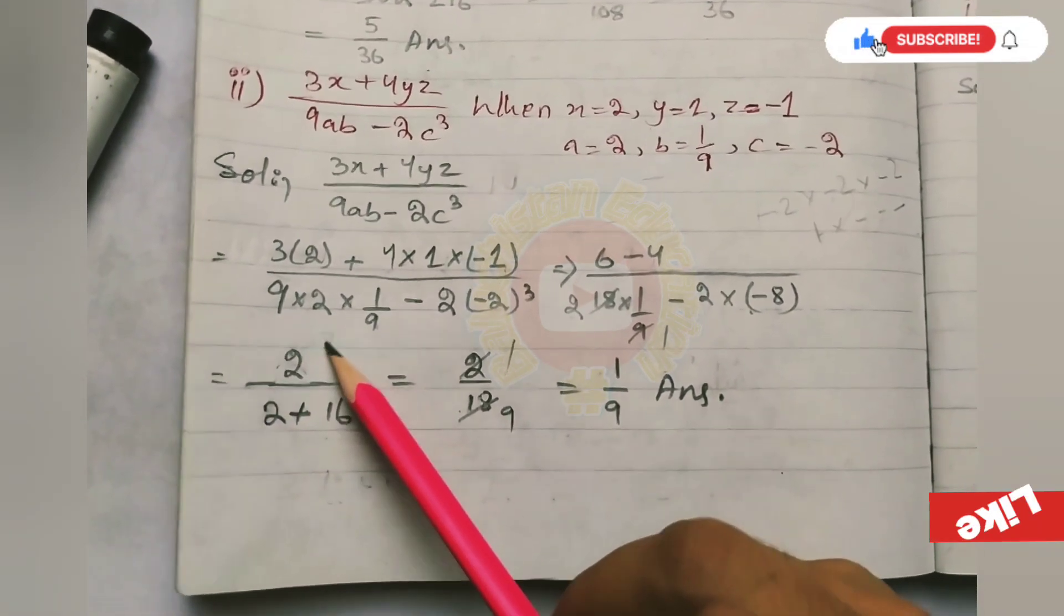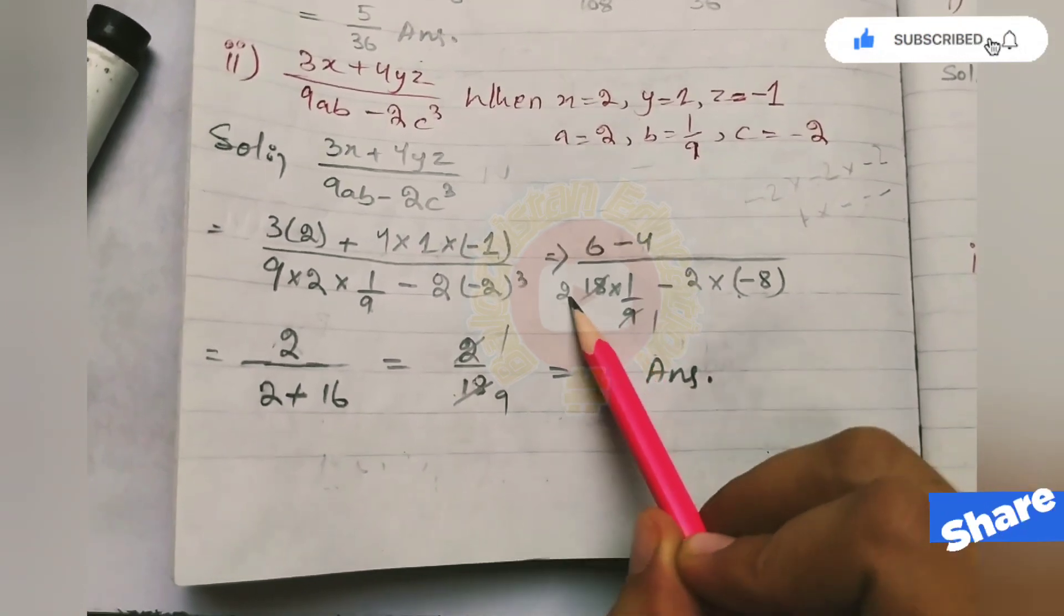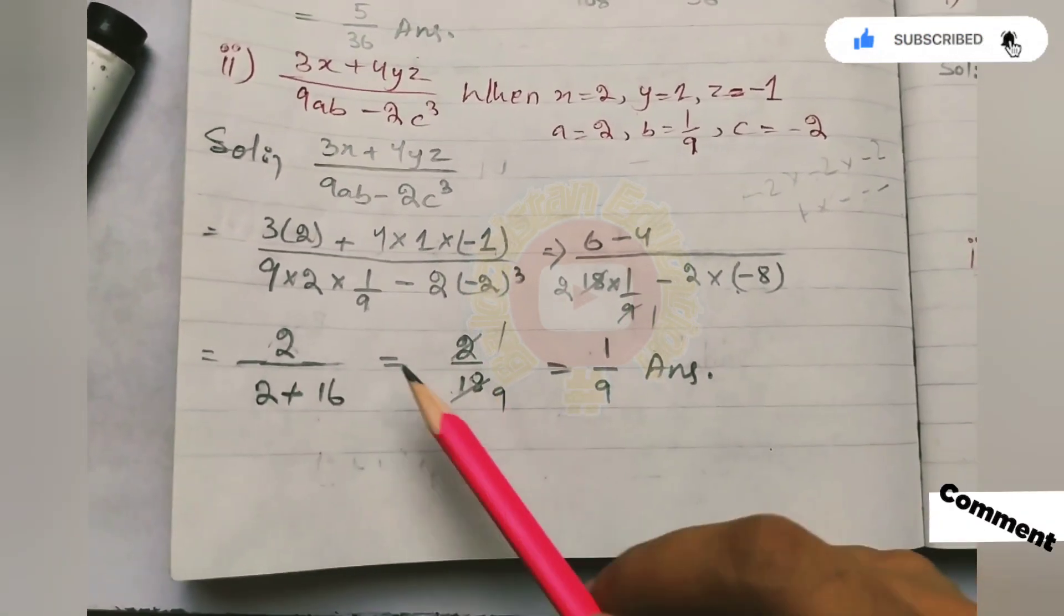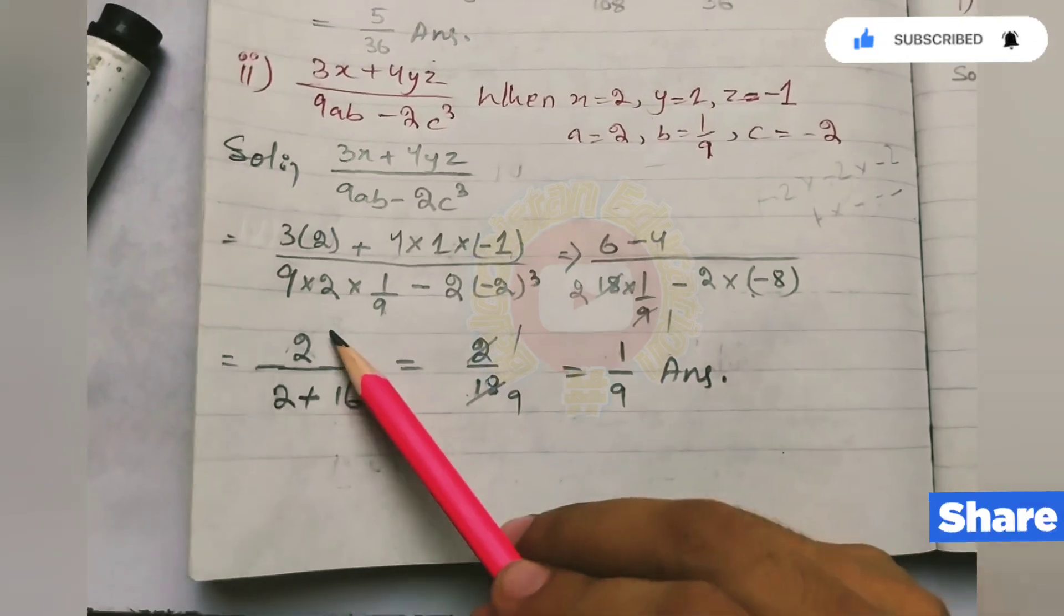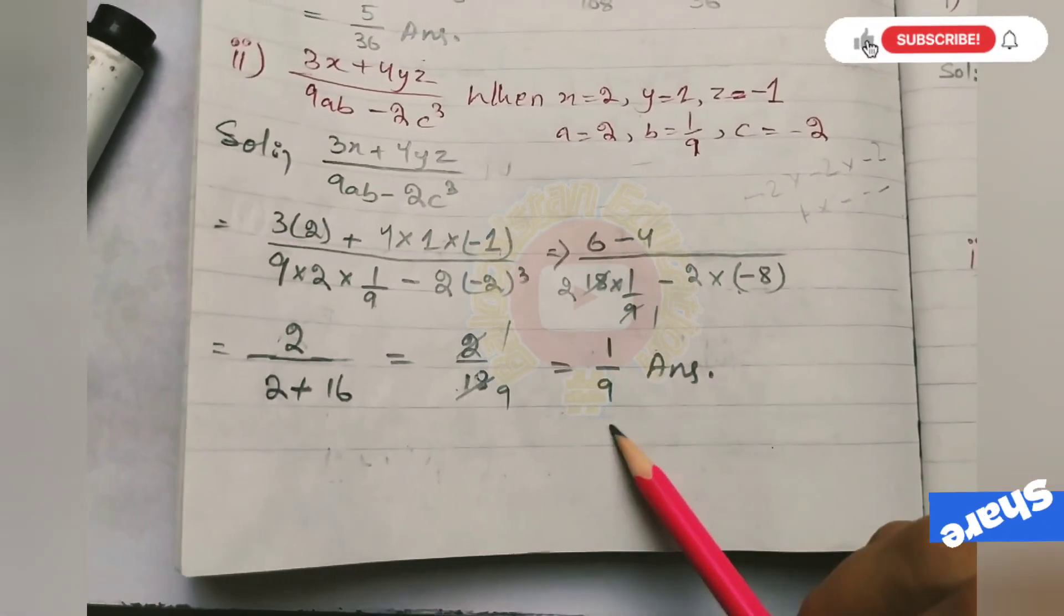Now we have 6 minus 4 equals 2 multiplied by 2. Here we have 2 multiplied by 1. Plus 8 times 2 is 16. 16 plus 2 is 18. And we have 2, so 2 times 1 is 2, 2 times 9 is 18. Our answer is 1 upon 9.